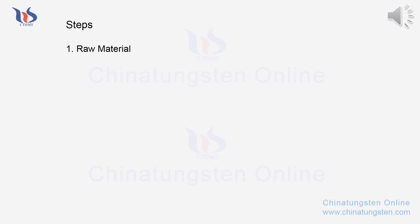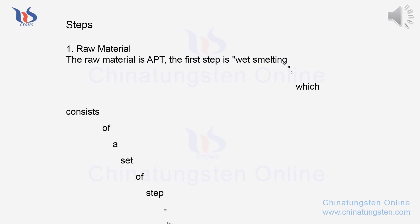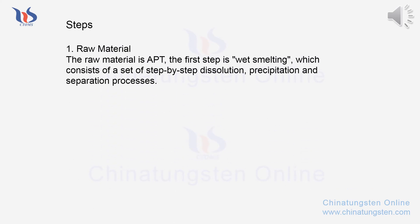Step 1 - Raw material: The raw material is APT. The first step is wet smelting, which consists of a set of step-by-step dissolution, precipitation, and separation processes.